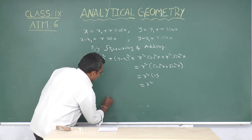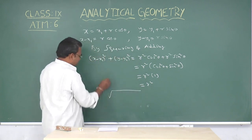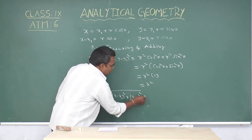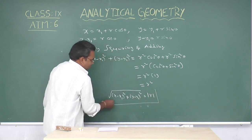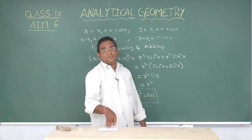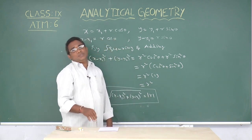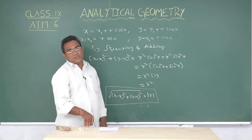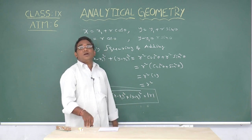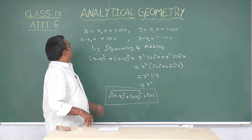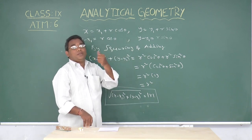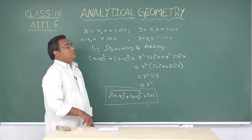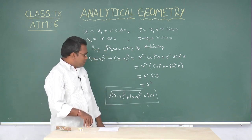From this, the square root of (x minus x1)² plus (y minus y1)² equals mod r. Hence, in the parametric equations, mod r represents the distance between the two points (x, y) and (x1, y1). If (x, y) is any point on the line passing through (x1, y1), then the distance between the two points is mod r.